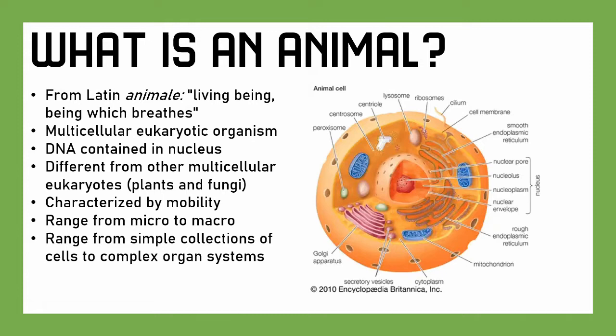An animal is defined as a multicellular eukaryotic organism. Multicellular means it has more than one cell, unlike single-celled organisms. Eukaryotic means 'good kernel' — its DNA, its genetic material, is contained in a membrane-bound nucleus. There are multiple types of multicellular eukaryotic organisms, and animals are different from those other types, which you probably know more commonly as plants and fungi. Animals are characterized, apart from plants and fungi, most notably by mobility. They also don't have cell walls like most plants and fungi have.